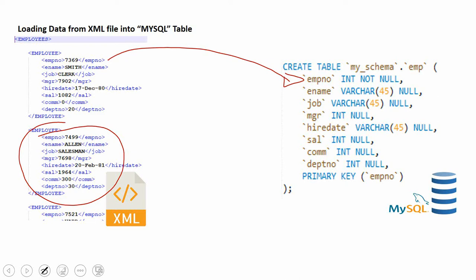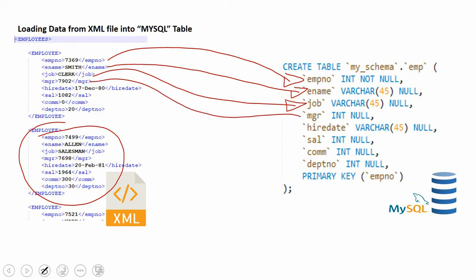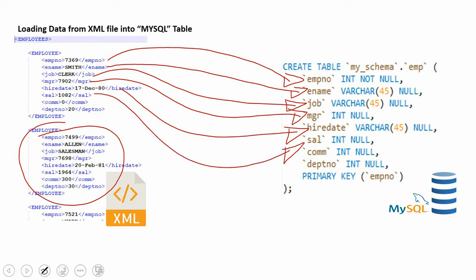I'm going to store the employee number into an integer column, the employee name into the 'ename' column, job information into the 'job' column, manager into the 'manager' integer column. The hire date I'm storing as varchar because a data type mismatch when storing date and time information will cause an error — while querying I'll convert it to a proper date format. The salary is stored in the 'sal' integer column, and commission and department are stored in their respective integer columns.